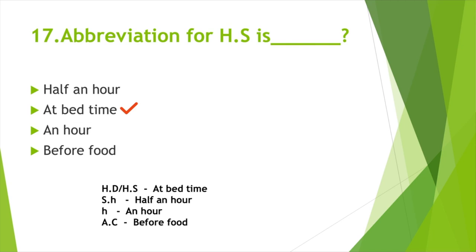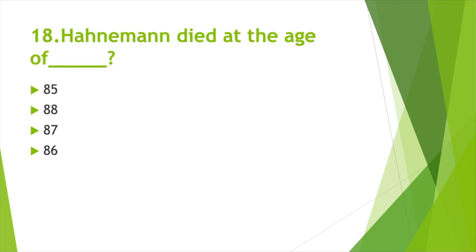Hahnemann died at the age of — Option A: 85, Option B: 88, Option C: 87, Option D: 86. Answer: Option B, 88.